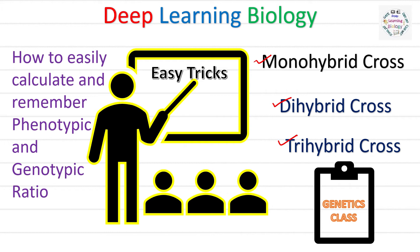You must remember that for monohybrid cross, the phenotypic ratio is 3:1 and the genotypic ratio is 1:2:1, so it is quite easy to remember. But some students do remember for dihybrid cross the phenotypic ratio is 9:3:3:1 and the genotypic ratio for dihybrid cross is...